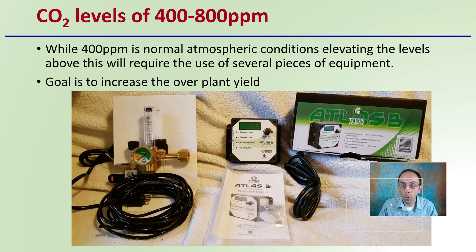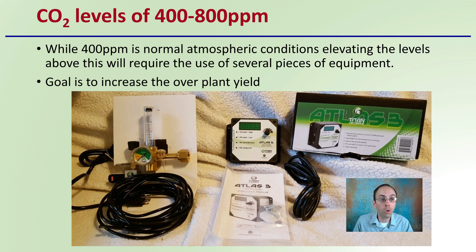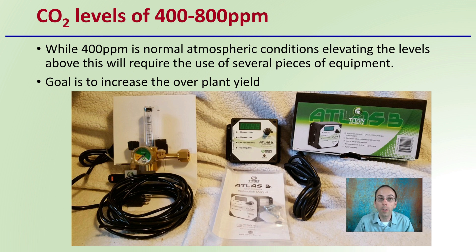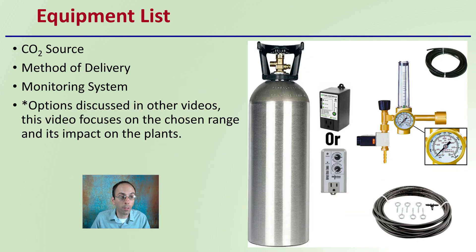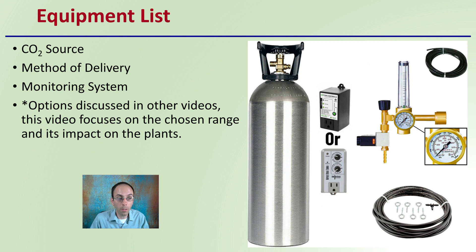400 parts per million is normal atmospheric conditions, and elevating the levels above this will require the use of several pieces of equipment. The goal is to increase the overall plant yield. The equipment list in general is going to be a carbon dioxide source, a method of delivering that carbon dioxide, and a monitoring system. Options will be discussed in other videos.